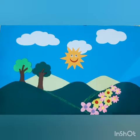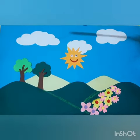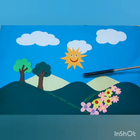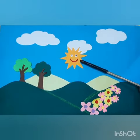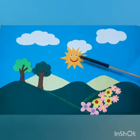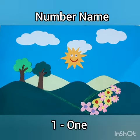Now children, how many suns can you see in this picture? Yes, there is only one sun. So the number name for one is O-N-E, 1.